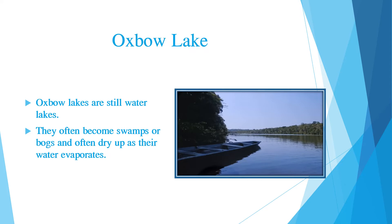Oxbow lakes often become swamps or bogs, and they often dry up as their water evaporates. Have a look at this picture — this is again a beautiful view of an oxbow lake bend. Have you heard the name Vyanatala Lake in Kerala? This is the only naturally formed oxbow lake in India, located at Vyanatala in Thrissur district of Kerala.